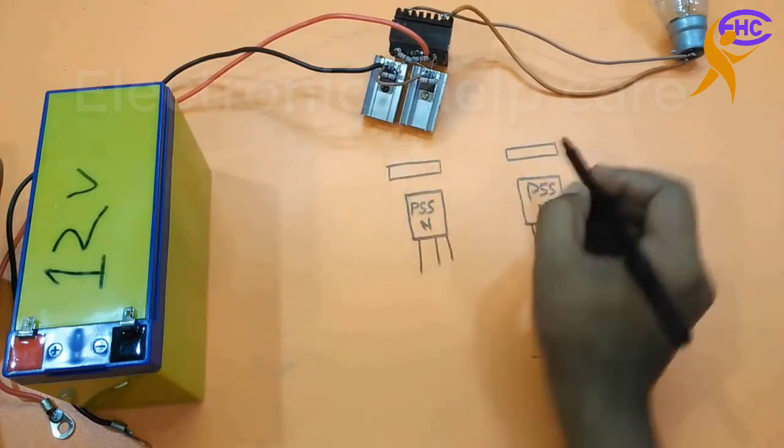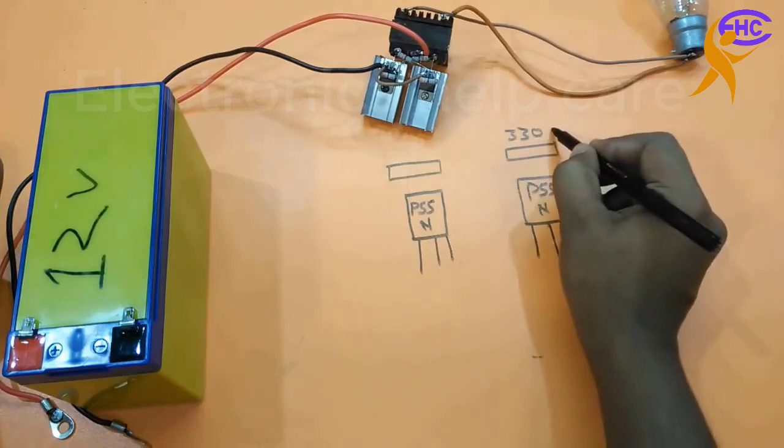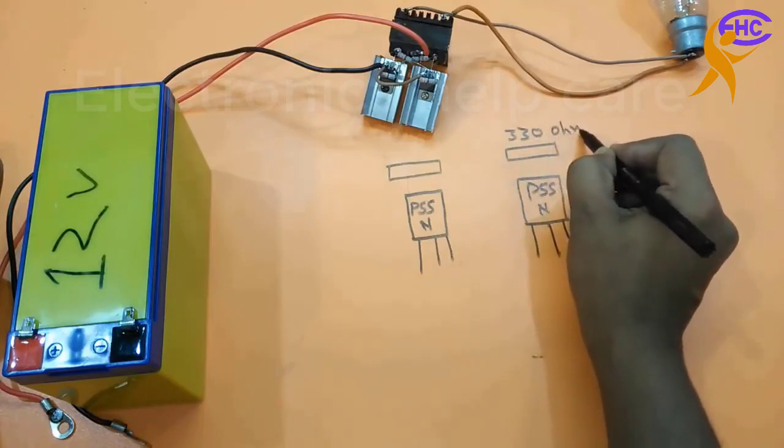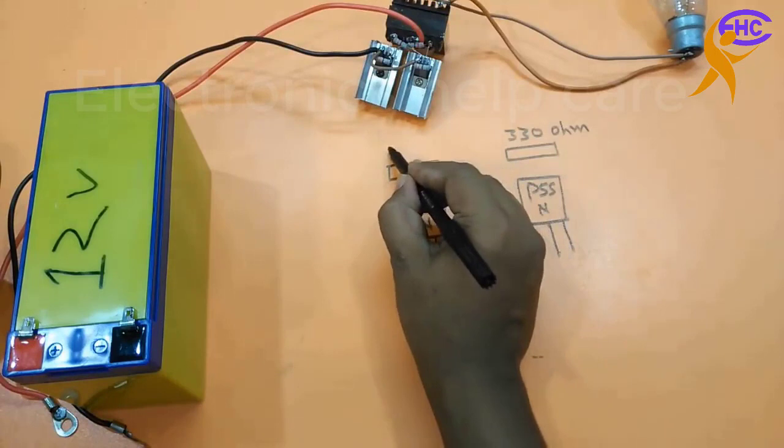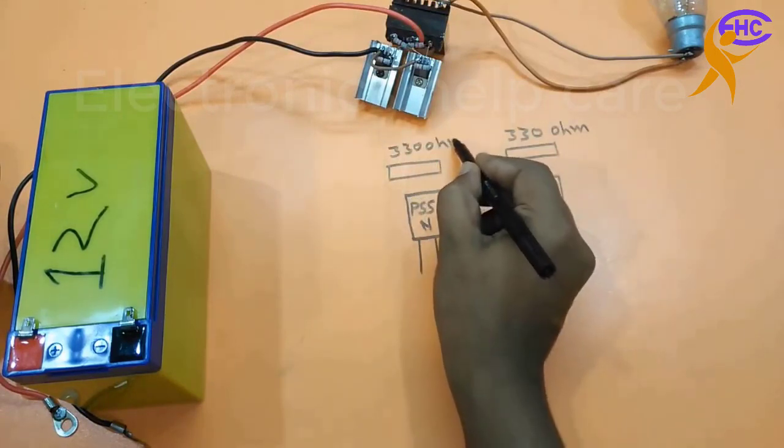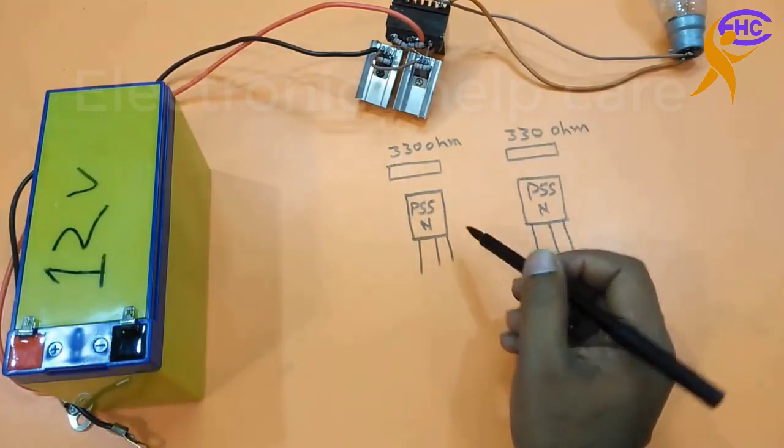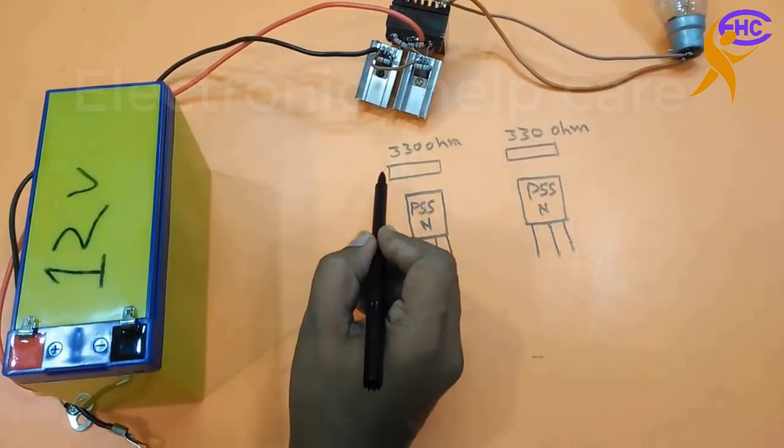P55N. This is a 300 ohm resistor, 1 watt or 2 watt. You can use either, but we have to use minimum 1 watt.